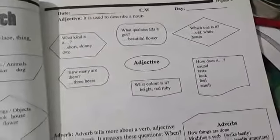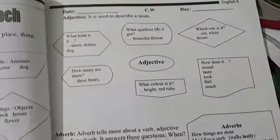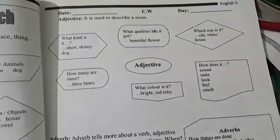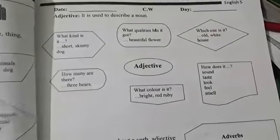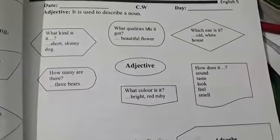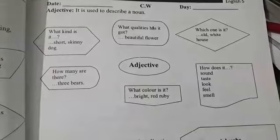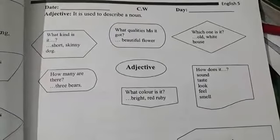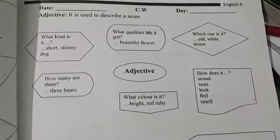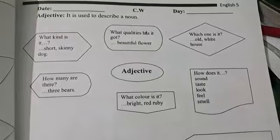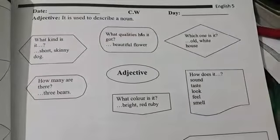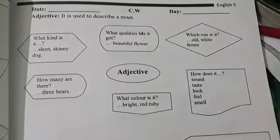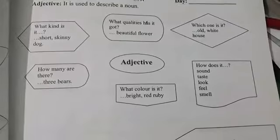We have done page number twenty-four, now come to page number twenty-five. This is adjective. Definition: adjective is used to describe a noun — it tells all the qualities of a noun. For example: what kind is it? Short, skinny dog. What qualities has it got? Beautiful flower. Which one is it? Old white house.